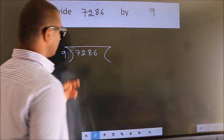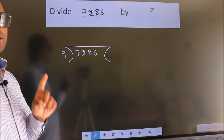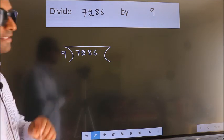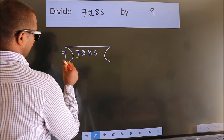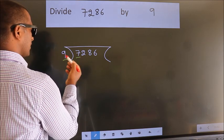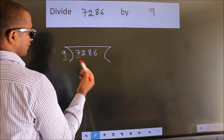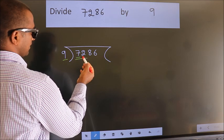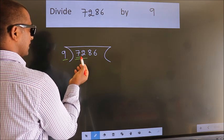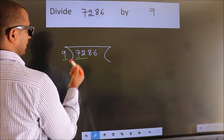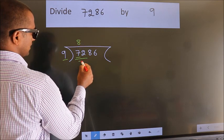This is step 1. Next, here we have 7, here 9. 7 is smaller than 9, so we should take 2 numbers, 72. When do we get 72? In the 9 table, 9 times 8 is 72.